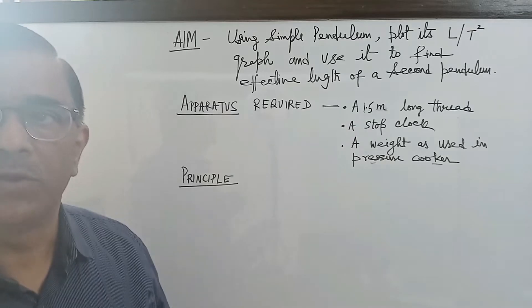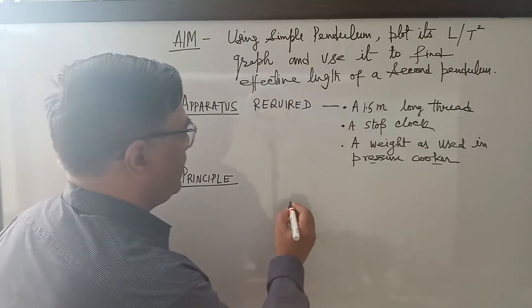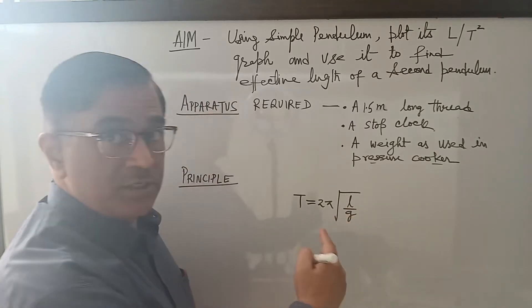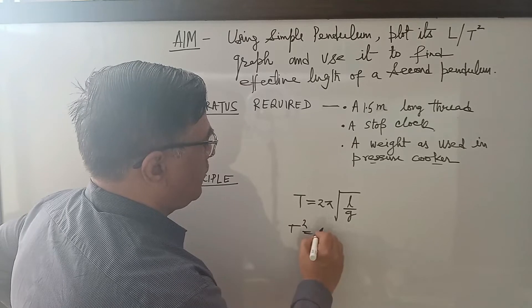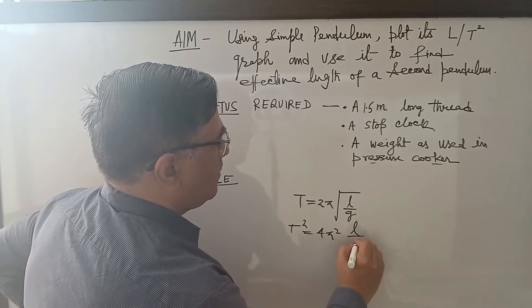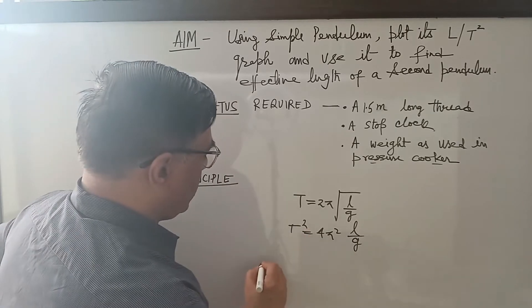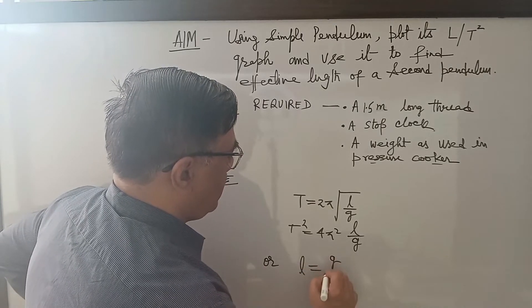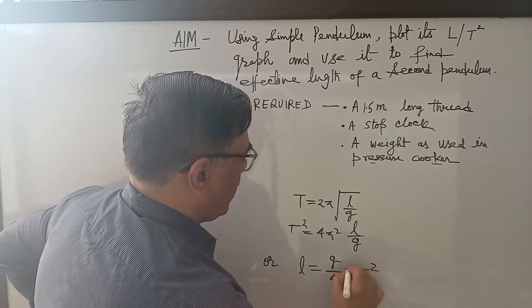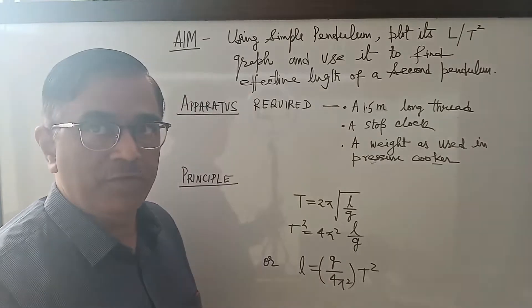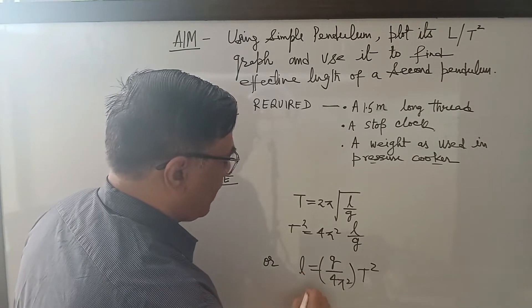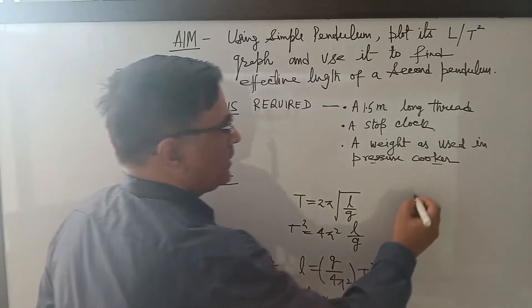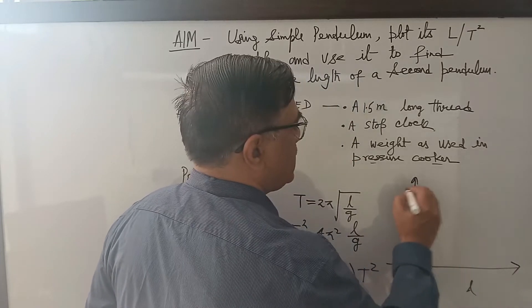The principle: the time period of a simple pendulum is T = 2π√(L/g). Squaring both sides, T² = (4π²/g)L. This can be rewritten as L = (g/4π²) × T². The term in brackets is a constant, so L is proportional to T². The graph between L versus T² should be a straight line passing through the origin.